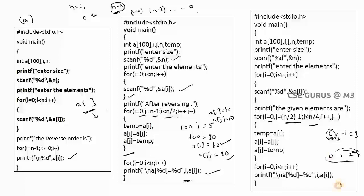For ten elements, half is five, so indices 0 through 4 are involved: index 0 swaps with index 4, index 1 swaps with index 3, and index 2 stays as it is. If the question asks to reverse the second half instead, j remains n - 1 and i should start from n/2 + 1, with the rest of the logic remaining the same. You adapt the solution according to the question.